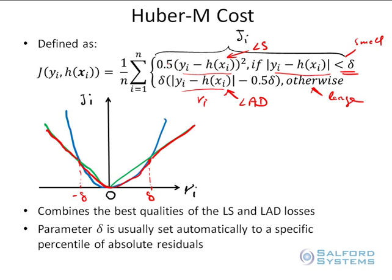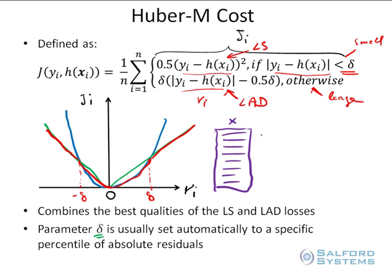The only remaining issue is the parameter delta. The parameter delta is usually set automatically to a specific percentile of absolute residuals. To understand this, suppose you have your data set, your observed response y, and you have constructed a response surface h(x) — that is the essence of supervised machine learning.